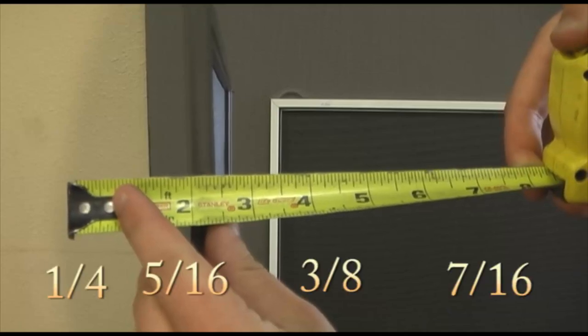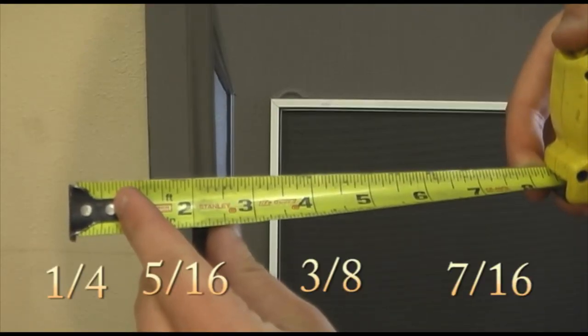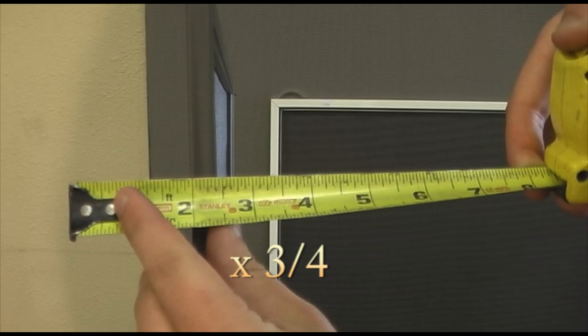Our frame thicknesses are 1 quarter, 5 sixteenths, 3 eighths, and 7 sixteenths, all by 3 quarters of an inch.